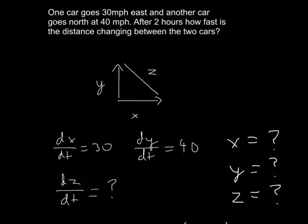The biggest thing in related rates problems is just the setup. Here's our problem: one car goes 30 miles per hour east, another car goes north at 40 miles per hour, and after two hours, how fast is the distance changing between the two cars?